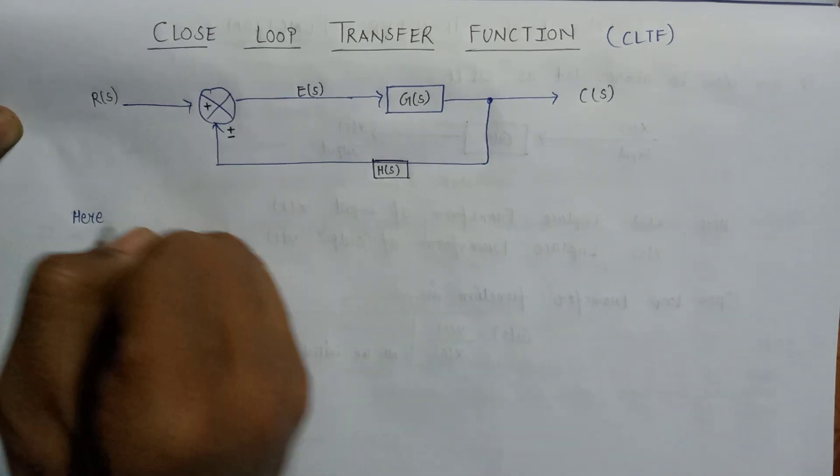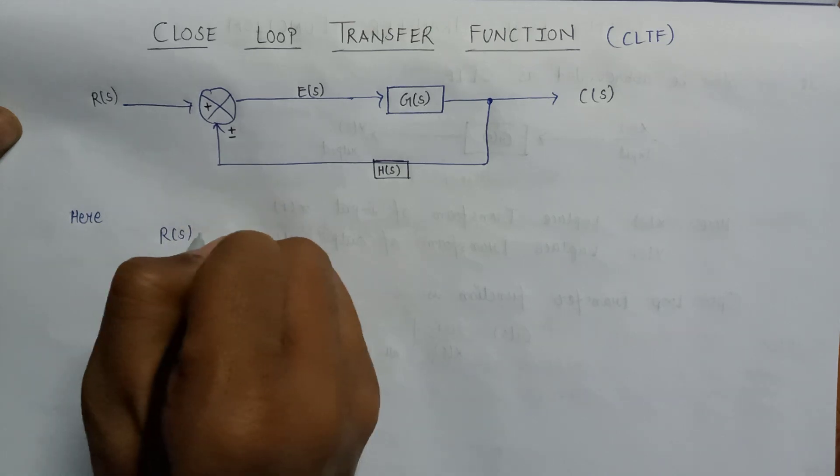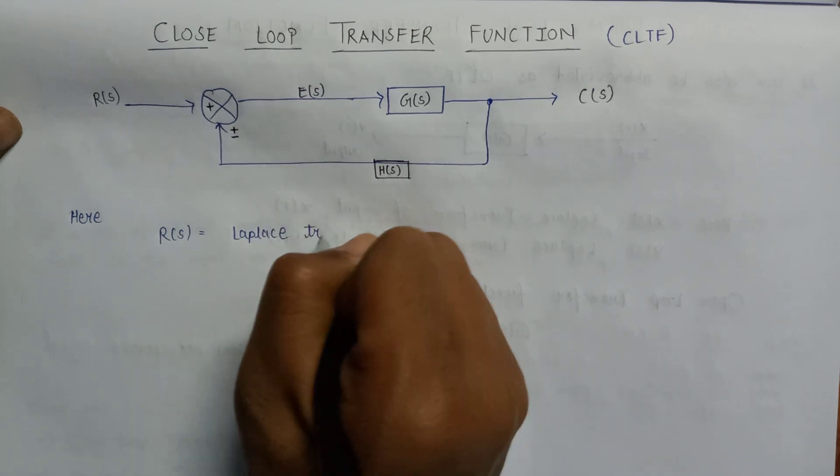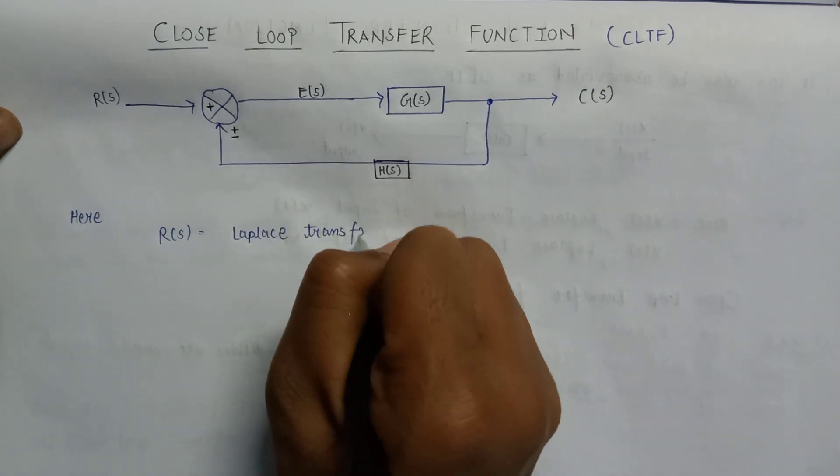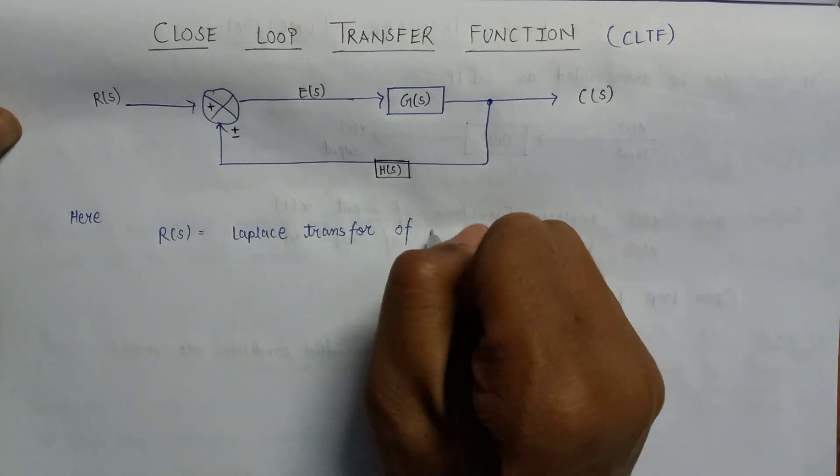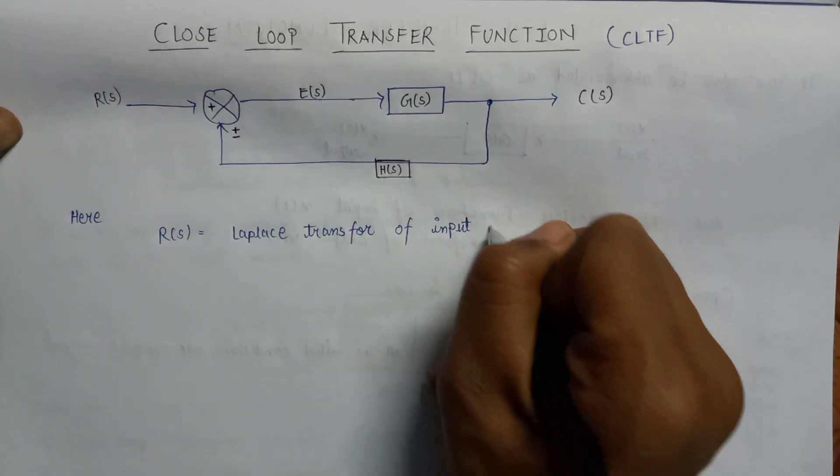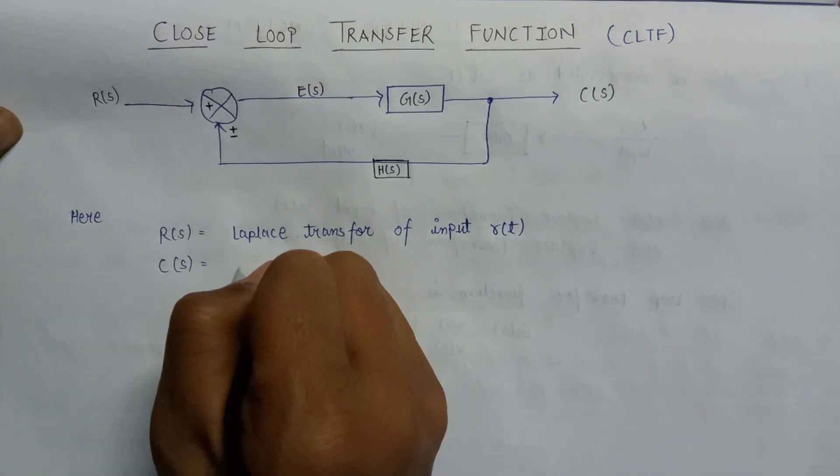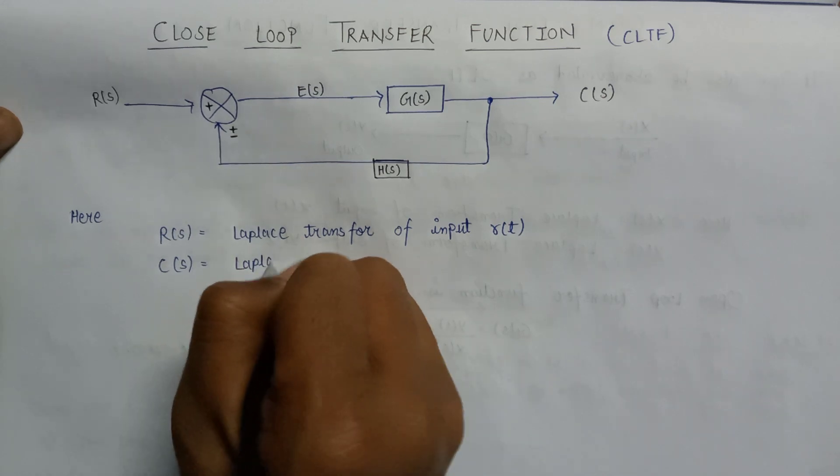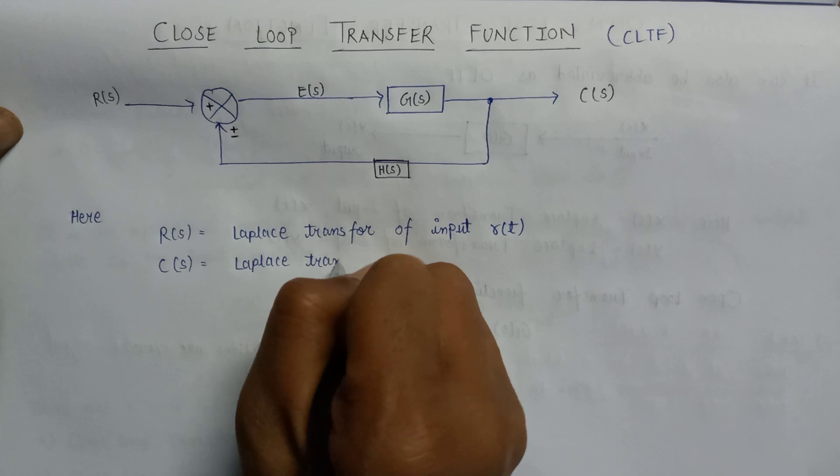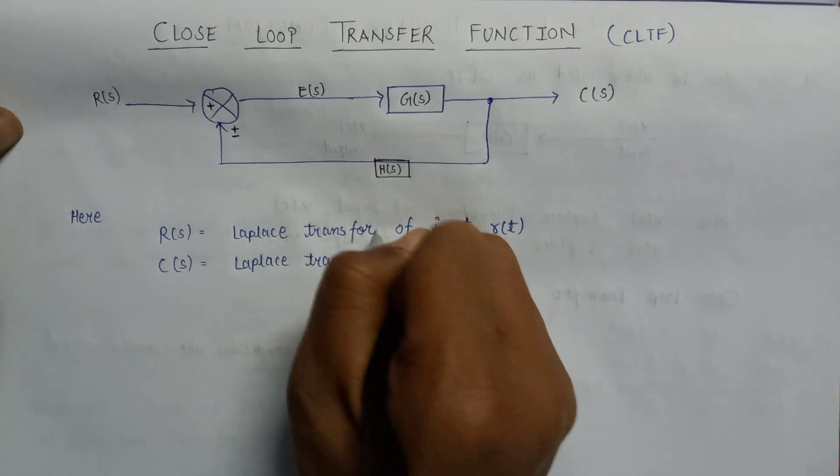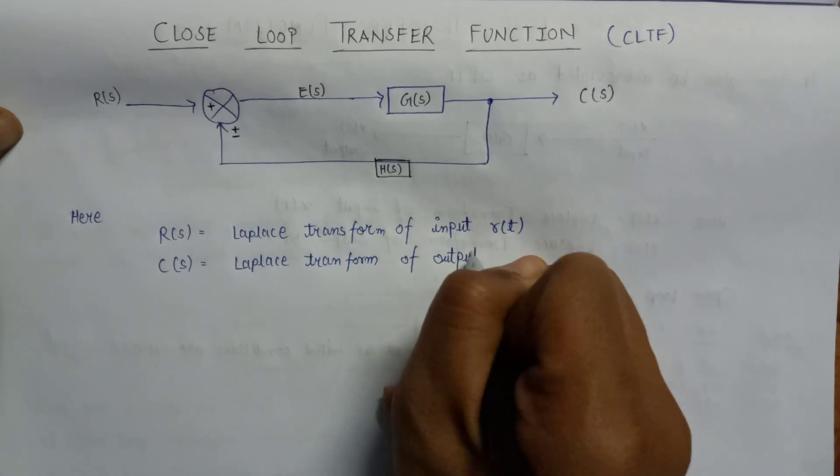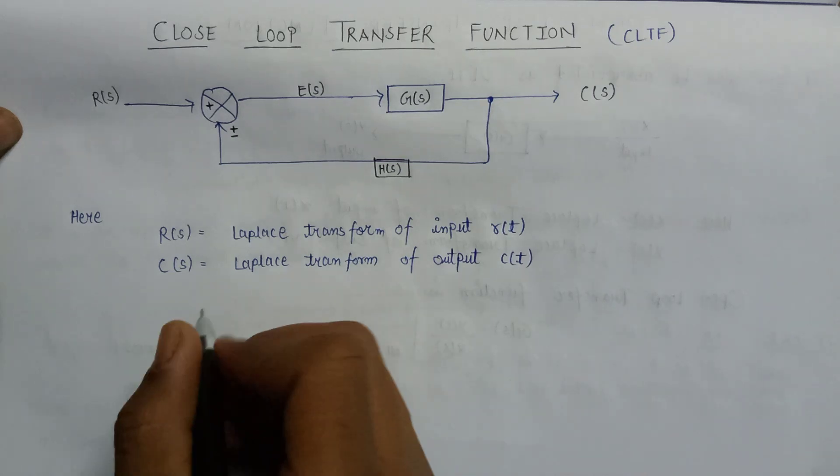Here R(s) is Laplace transform of input r(t). C(s) is Laplace transform of output c(t).